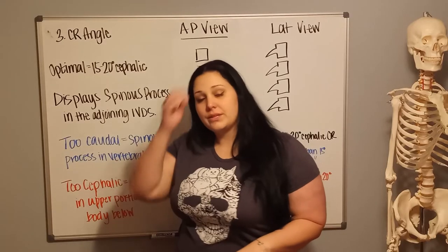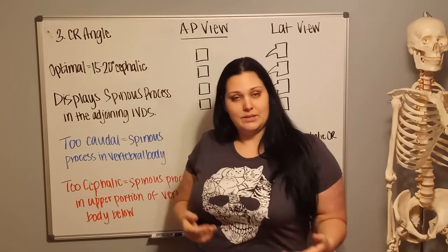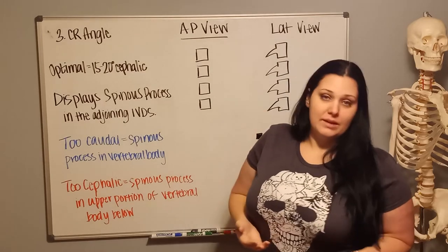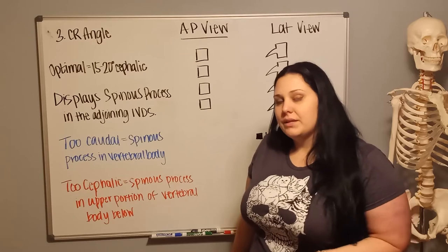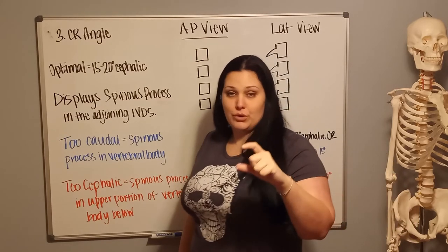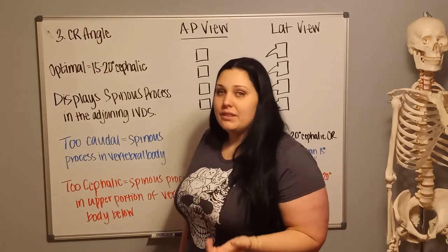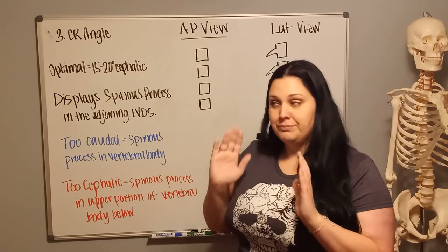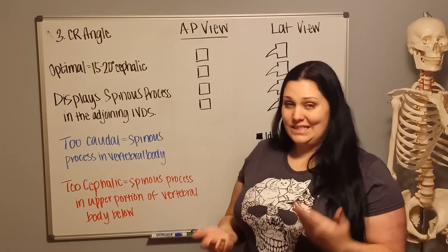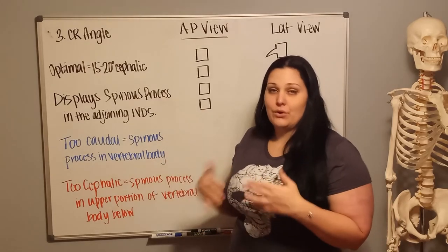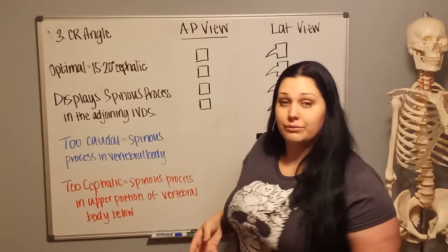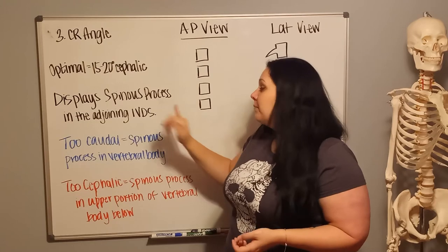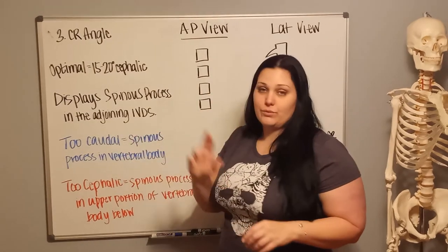The last thing to evaluate for the AP Axial C-Spine is your CR angle. For an optimal AP Axial C-Spine projection, the CR angle should be 15 to 20 degrees cephalic. When that's done, it places the spinous process in between the vertebrae, centered on the intervertebral disc spaces — or IBDS.